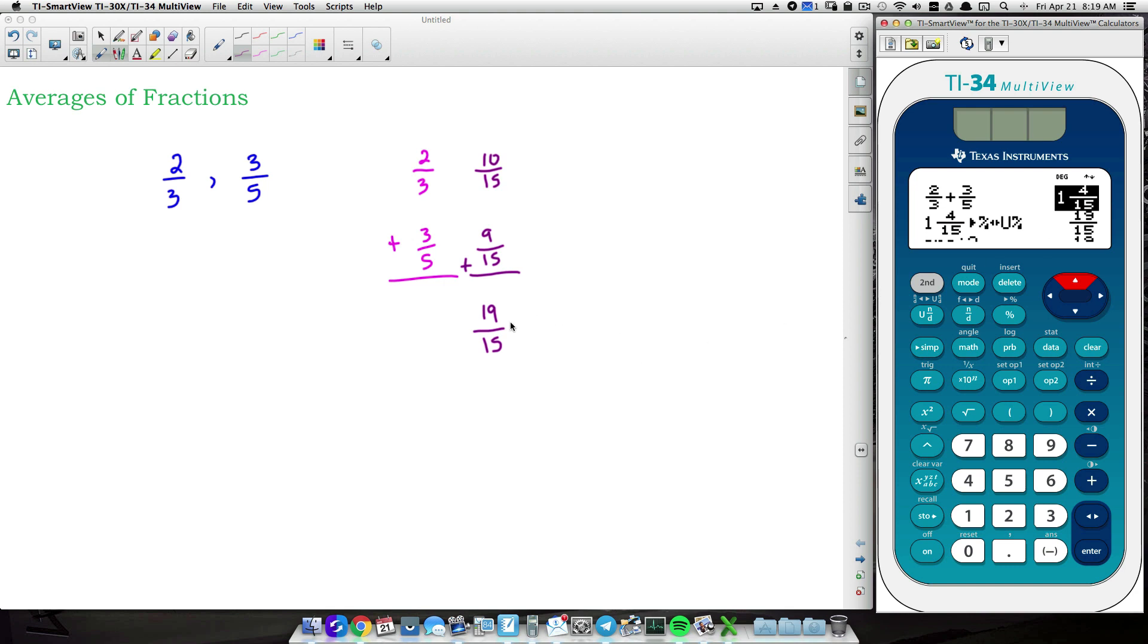Now you want to divide this by 2. Well, really, when you divide something by 2, you're taking half of it. Anytime you divide something by 2, you're taking half of it. So why am I saying that? Well, we can take this thing right here to divide it by 2. We really can multiply by half. We can really just take half of that number.